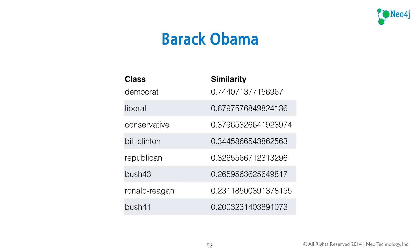Finally, we have Barack Obama, the current president. At the top we see the labels provided, and he's closest to Bill Clinton. He appears to be fairly bipartisan as well, and is farthest away from Bush 41.